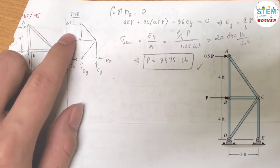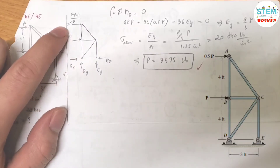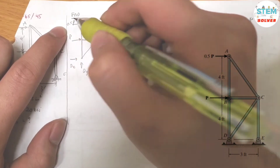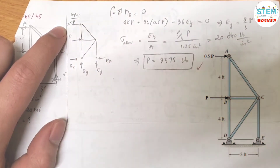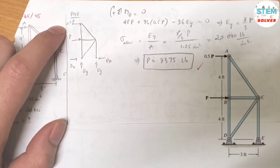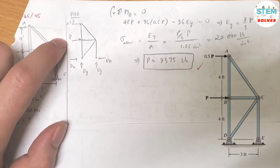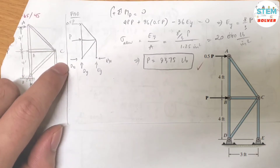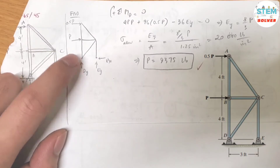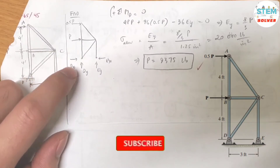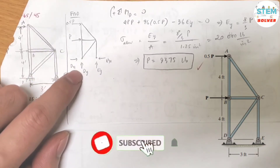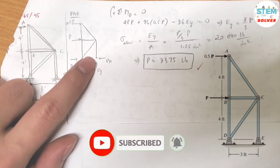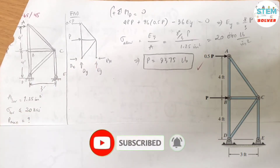Here is my free body diagram. I have a 0.5P force here, a P force here, and D. At this one, you have X and Y component forces, and the same thing over here.